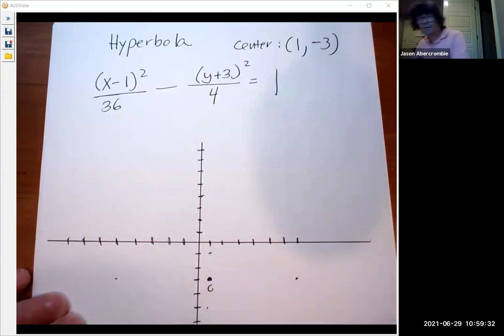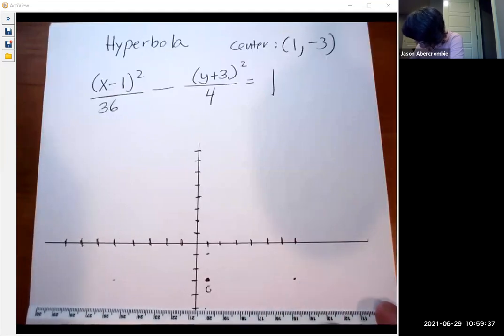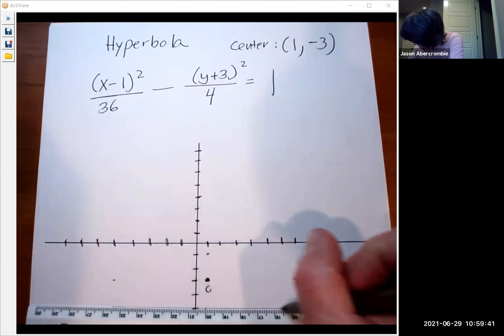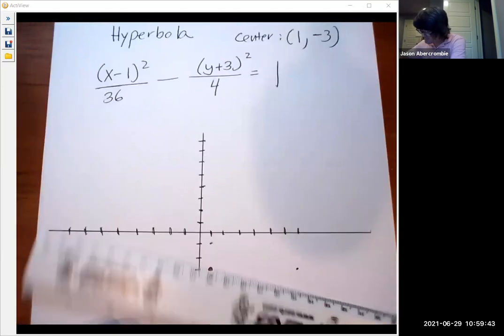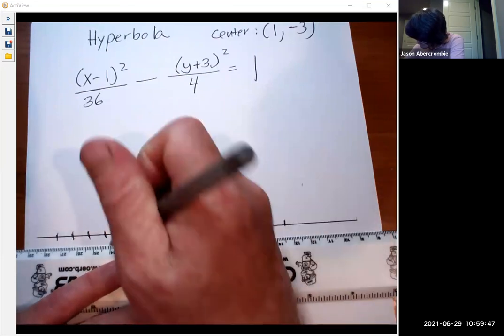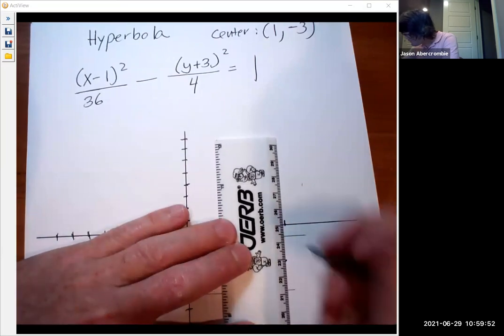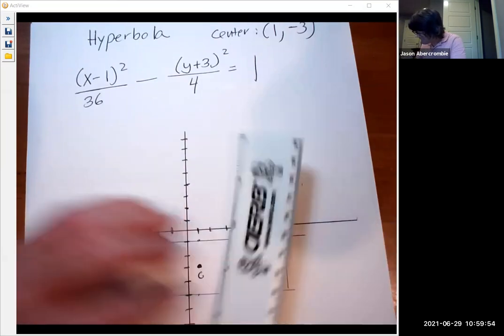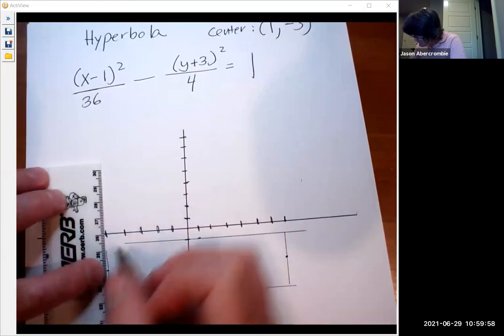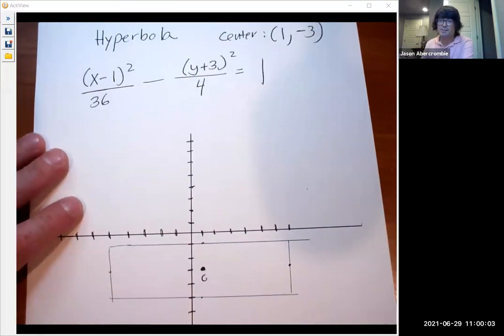And now I want to draw an imaginary rectangle. This is not part of the graph. I'm just going to draw it real lightly, but it'll kind of help me make my graph. I'm going to draw a little line there, draw a little line there, and then right there, and then right here. Okay, so you've got this little box.